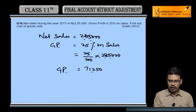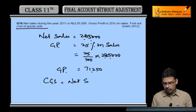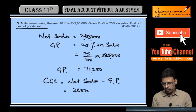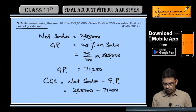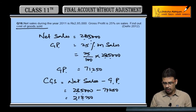Calculate cost of goods sold. Cost of goods sold equals net sales minus gross profit. Net sales given: 285,000. Gross profit 25% is 71,250. So the remaining figure is 213,750 — that is your cost of goods sold.